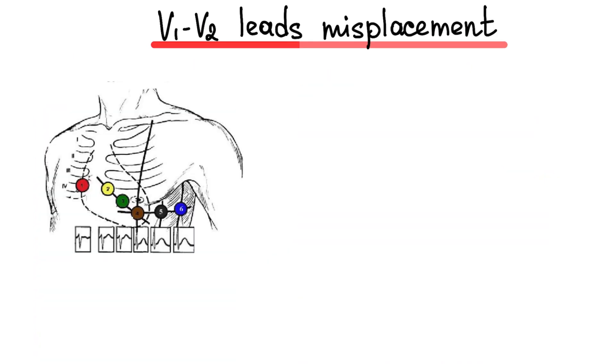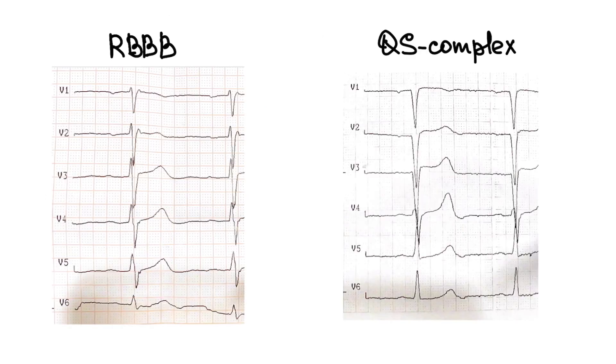V1 and V2 misplacement. Leads V1 and V2 are located in the sternum's fourth intercostal space just to the right and left. Upwards misplacement of V1 and V2 often produces an incomplete right bundle branch block pattern or it looks like myocardial infarction.